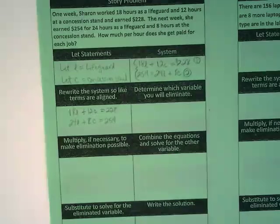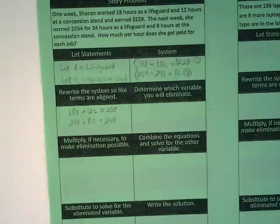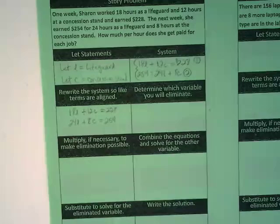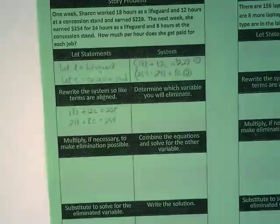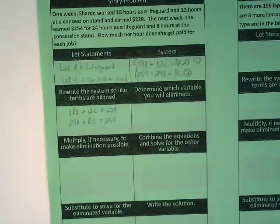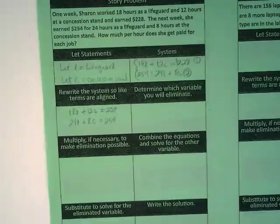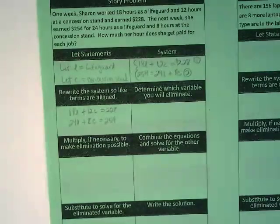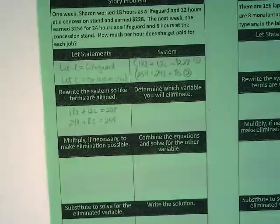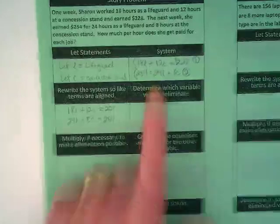I specifically chose this one as my example to do with you guys because of this next step. We have to determine which variable to eliminate, and as you guys remember, when we first started doing elimination problems a couple days ago, it was things like 4X over minus 4X, and it was really obvious that we needed to eliminate the X term. This isn't so obvious.